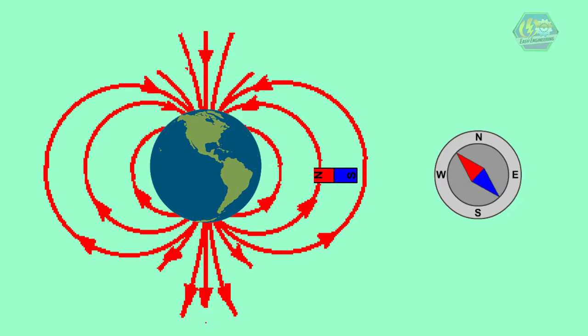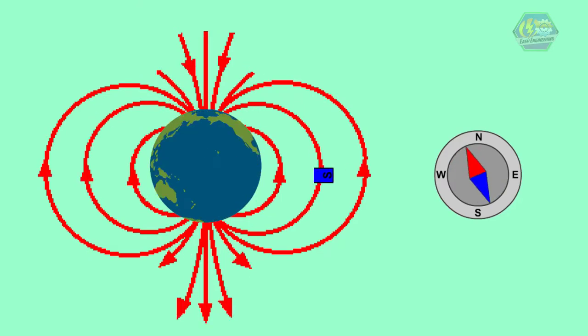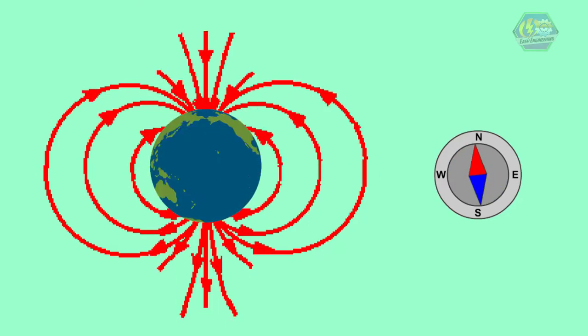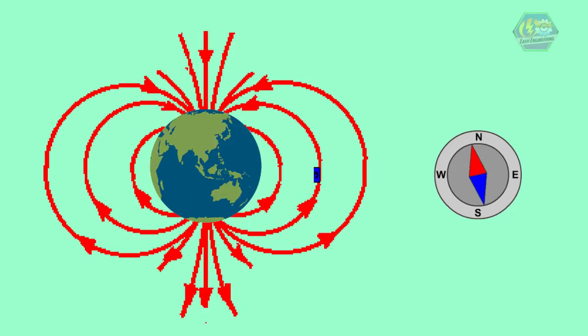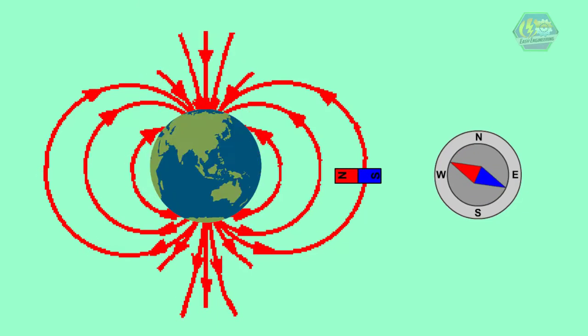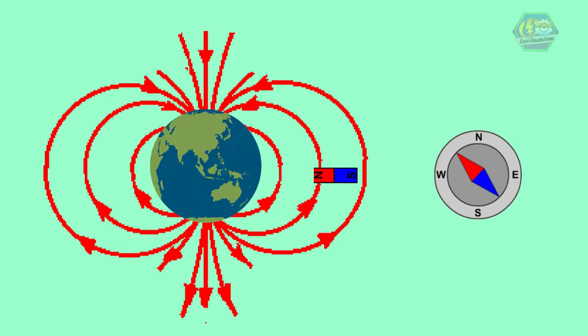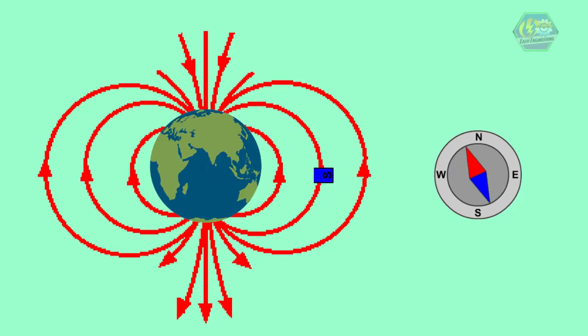It has a magnetic north pole and a magnetic south pole. These magnetic poles exist because of the way atoms are distributed in Earth's iron core, which align their spins just like the atoms in a bar magnet.